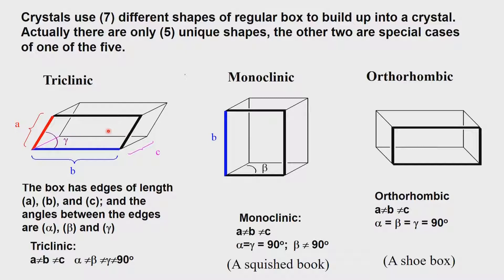We have the 230 ways in which atoms can arrange themselves in space groups, but this does not tell us what kind of atoms can arrange in what way. With over a hundred elements in the periodic table and different bond types — ionic, covalent, metallic — all these can occur inside the crystal and give the material its properties. We have to see how the electron density is distributed inside the unit cell box.